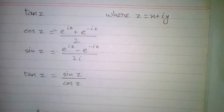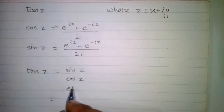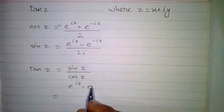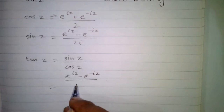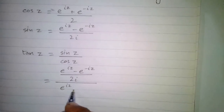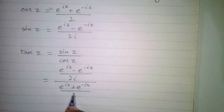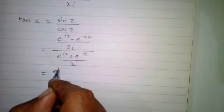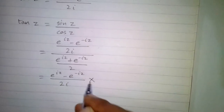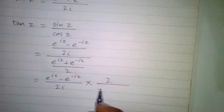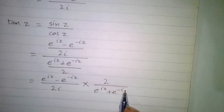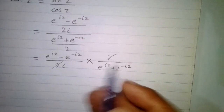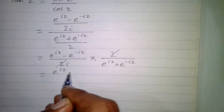Now tan(z) is equal to sine of z over cos of z. Substituting, in the numerator we have e to the power iota z minus e to the power minus iota z upon 2 iota, and in the denominator we have e to the power iota z plus e to the power minus iota z upon 2. This equals the numerator multiplied by 2 over the denominator, and we can cancel the two's.